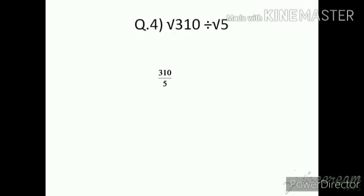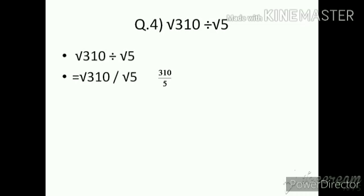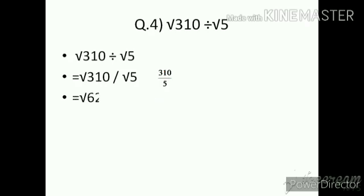Question number 4: √310 ÷ √5. Write as √310 upon √5 and do the division. 310 ÷ 5 = 62. So the answer is √62.